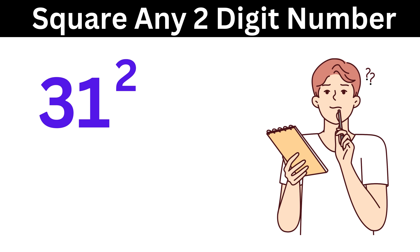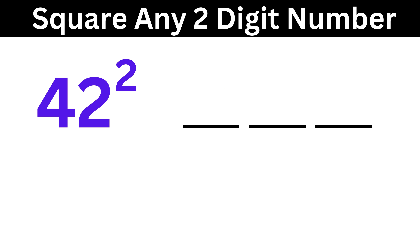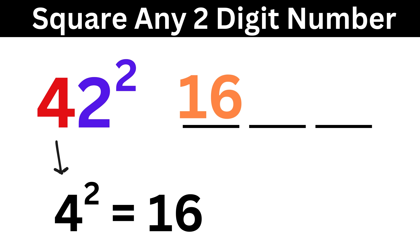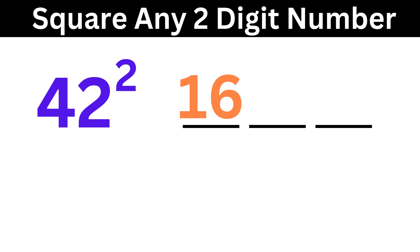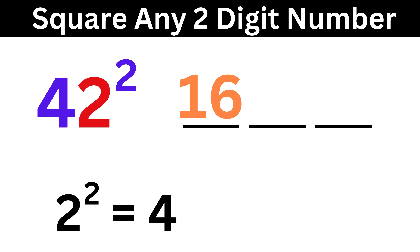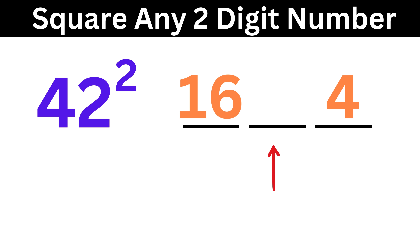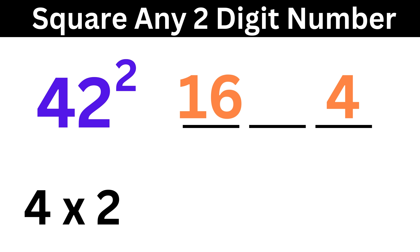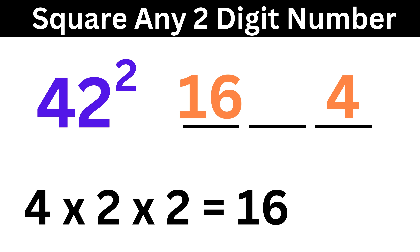Consider a slightly larger example, 42 squared. Divide it into 3 parts, and write 4 squared here, which will be 16. Next, let us consider the last digit, which is 2, whose square is 4, so write it here. Now for the middle part, we first multiply both these digits, or 4 times 2.